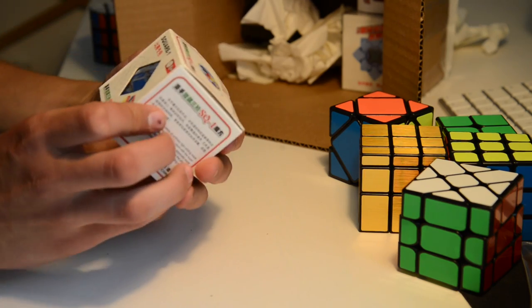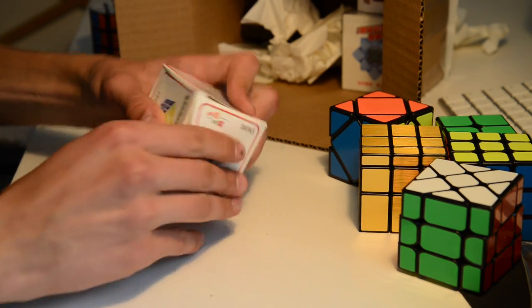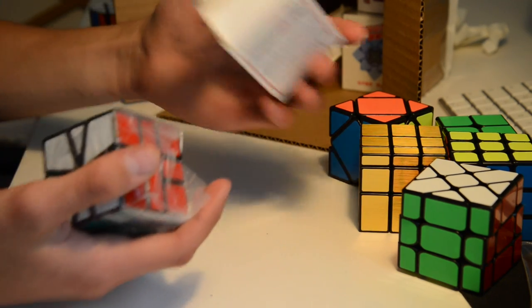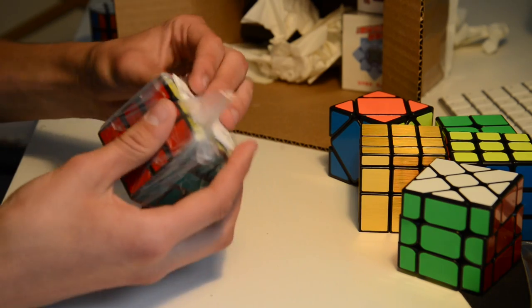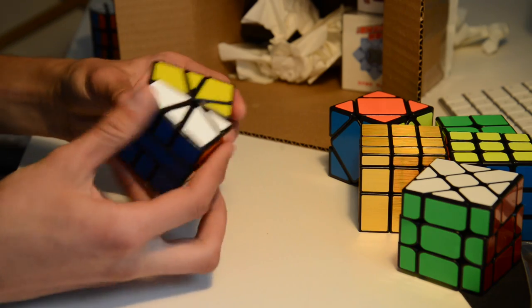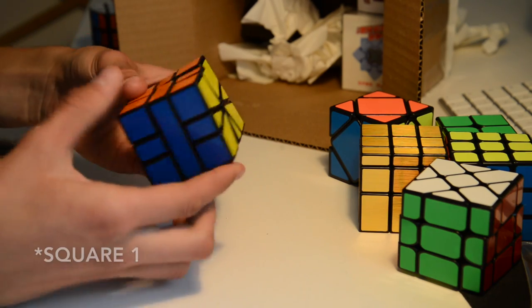Next up we have square one from Xingxiao. This is Xingxiao square one. There's so many packages, random stuff. Pretty normal.